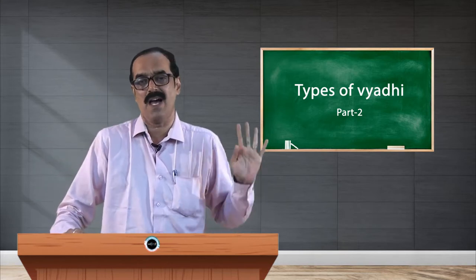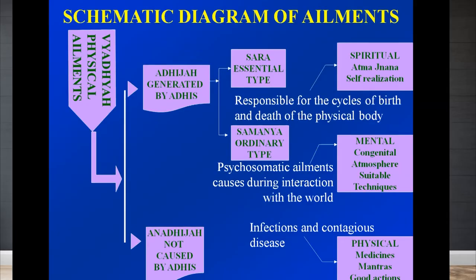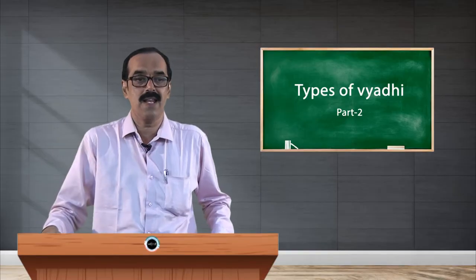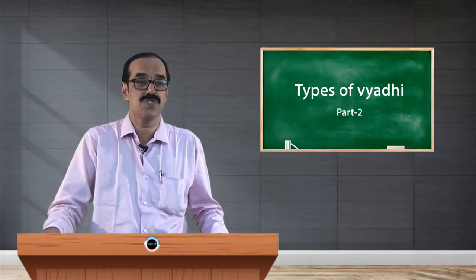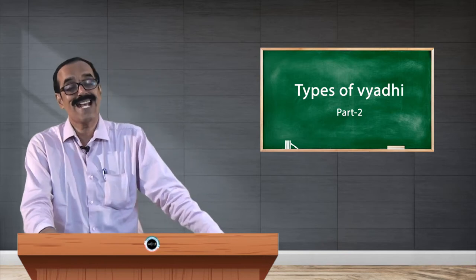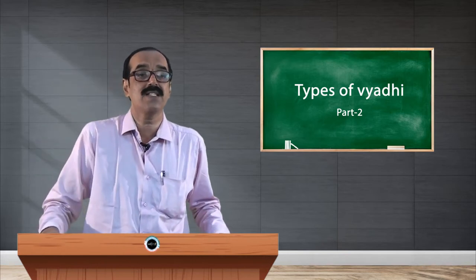What is Samanya type? Samanya means ordinary type. So when we interact with the world and come across various situations — for example, a hypertension patient says 'I don't know why I have gotten hypertension, but I have been working with a lot of tension for the last 10 years.' Similarly with diabetes. So due to our wrong lifestyle, stress, and tensions, we get the second variety of Vyadhi, that is the Samanya type.